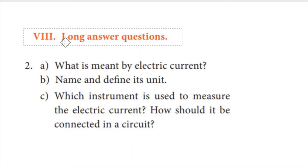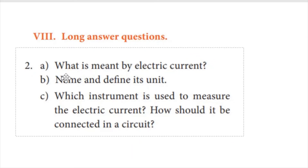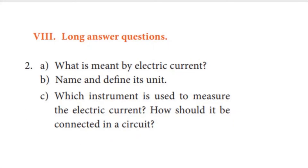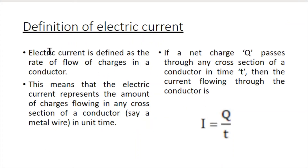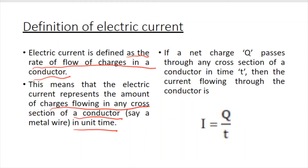In your textbook, one long answer question is asked: what is meant by electric current? Name and define its unit. Which instrument is used to measure electric current and how should it be connected in a circuit? These are three different questions. Electric current is defined as the rate of flow of charges in the conductor. This means electric current represents the amount of charges flowing in any cross section of the conductor in unit time.